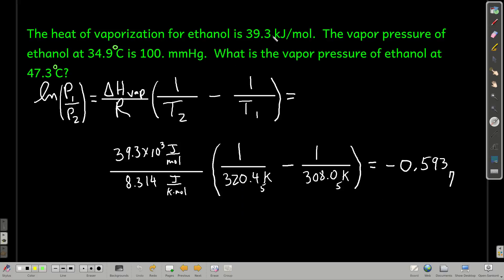Here's an example. Given the heat of vaporization for ethanol, 39.3 kilojoules per mole, and the vapor pressure at this temperature, which is 100 millimeters of mercury at 34.9 degrees Celsius, what's the vapor pressure at another temperature, say 47.3 degrees Celsius? Well, we're going to use the Clausius-Clapeyron equation. Make sure you keep your ones and your twos straight.